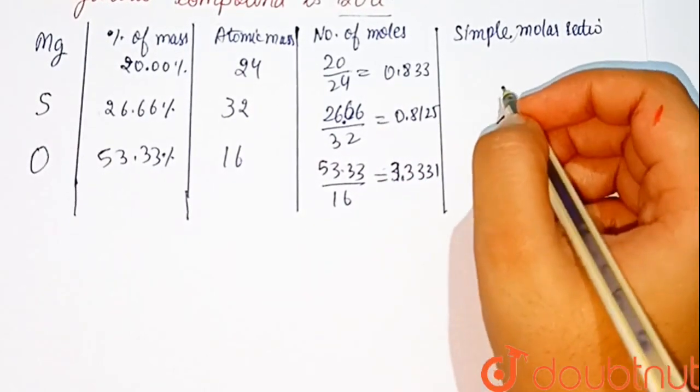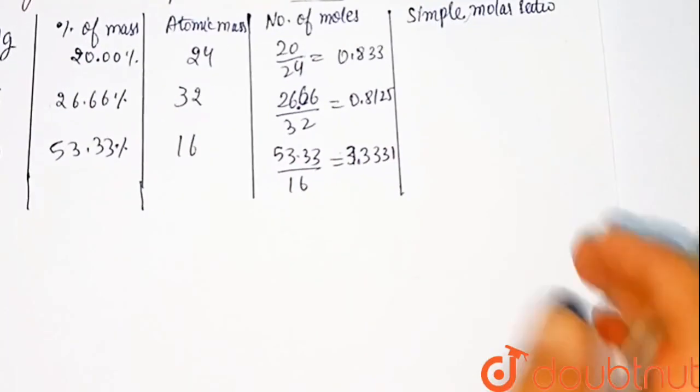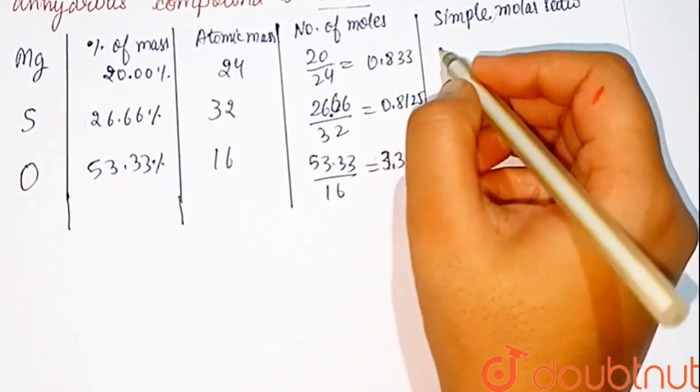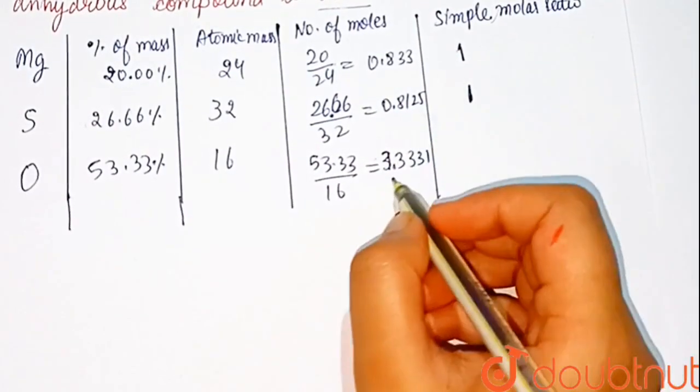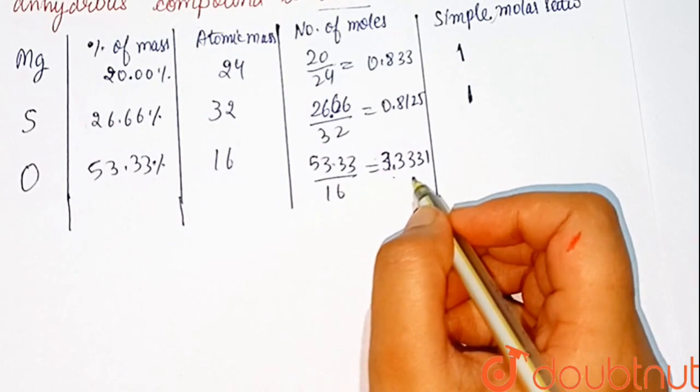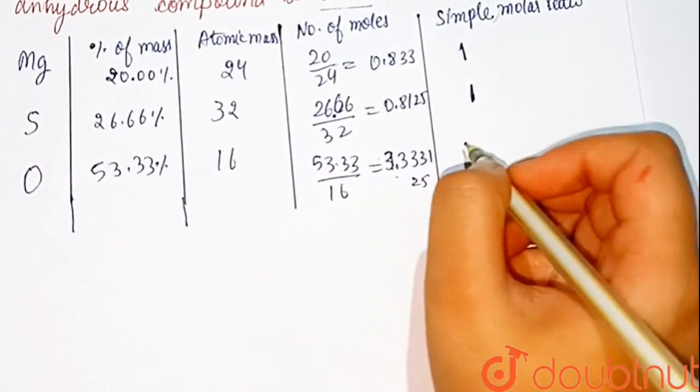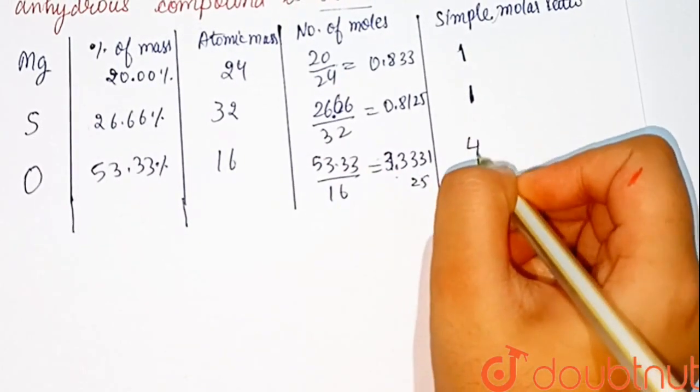On simple ratio, as we see, it equals 0.8, approximately equal to 1; 0.8, approximately equal to 1; and 3.331, which will equal to 4.